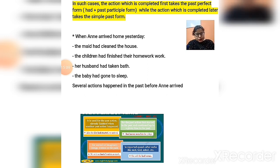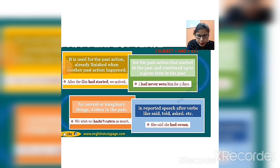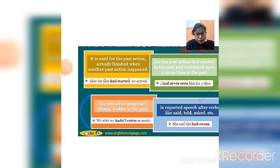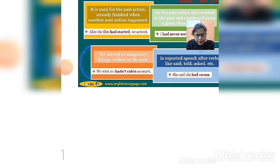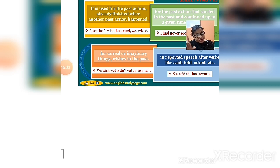I hope the structure of simple past plus past perfect is understood. Now let us see some more uses. Past perfect is used for a past action already finished when another past action happened — as we just explained. It is also used for unreal situations, imaginary things, and wishes in the past. For example: 'We wish we hadn't eaten so much' — meaning it is a wish about something we did in the past.